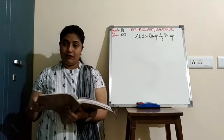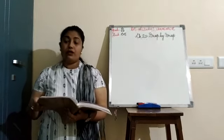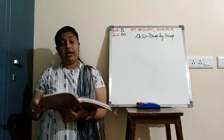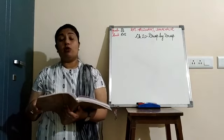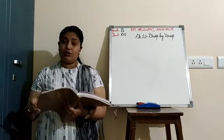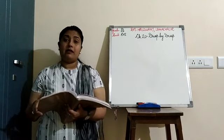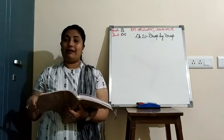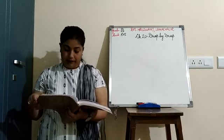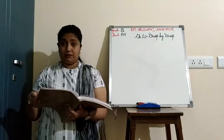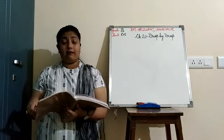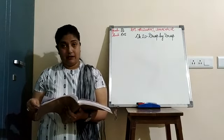Here some questions are given. First question: from where do the people in Madhu's village fetch water for drinking? The correct answer is from the nearby pond — unke ghar ke paas jo talab tha, wahan se woh paani le ke aate the. Second question: who fetches water in Madhu's house? That is Madhu's mother and sister.